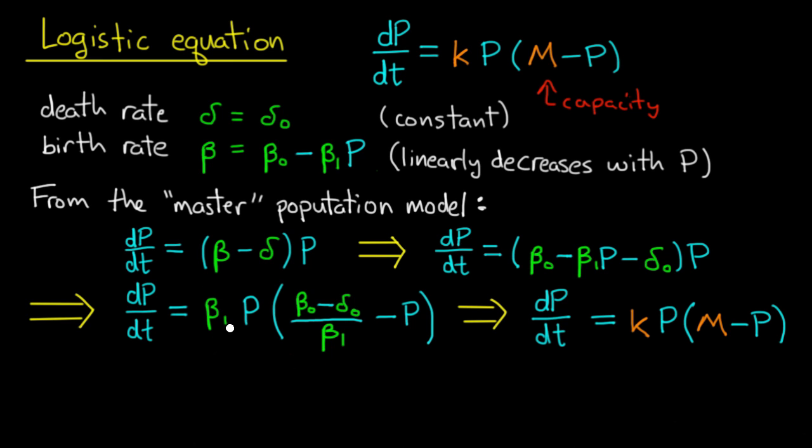Call beta one K, and call beta zero minus delta zero divided by beta one M. And there it is. It becomes dP/dt equals K times P times M minus P.